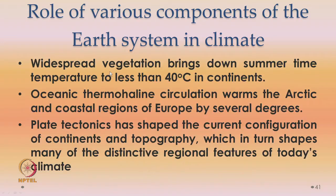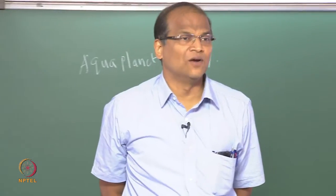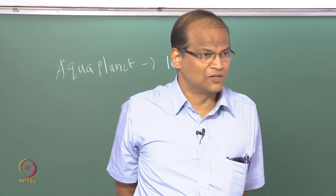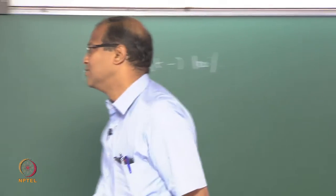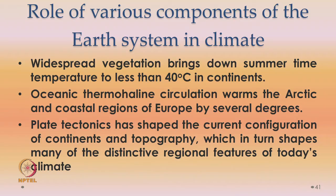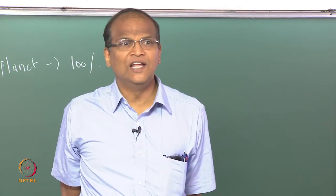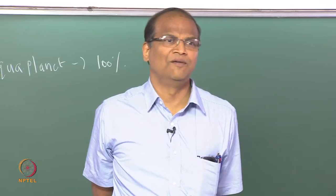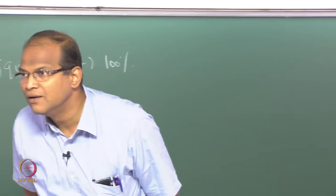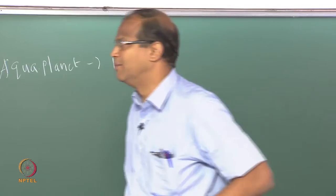For example, the large storage of heat in the ocean mixed layer and the cryosphere regulates the extremes in weather — it moderates fluctuations during winter and summer because there is so much of M·Cp·ΔT. There is a thermal inertia associated with this. Widespread vegetation brings down summer temperatures to less than 40 degrees in the continents — otherwise, summer temperatures would have been much higher. The oceanic thermohaline circulation, which occurs because of differences in temperature and salinity, warms the Arctic region and the coastal zone of Europe by several degrees — that is why Europe has a very habitable climate.